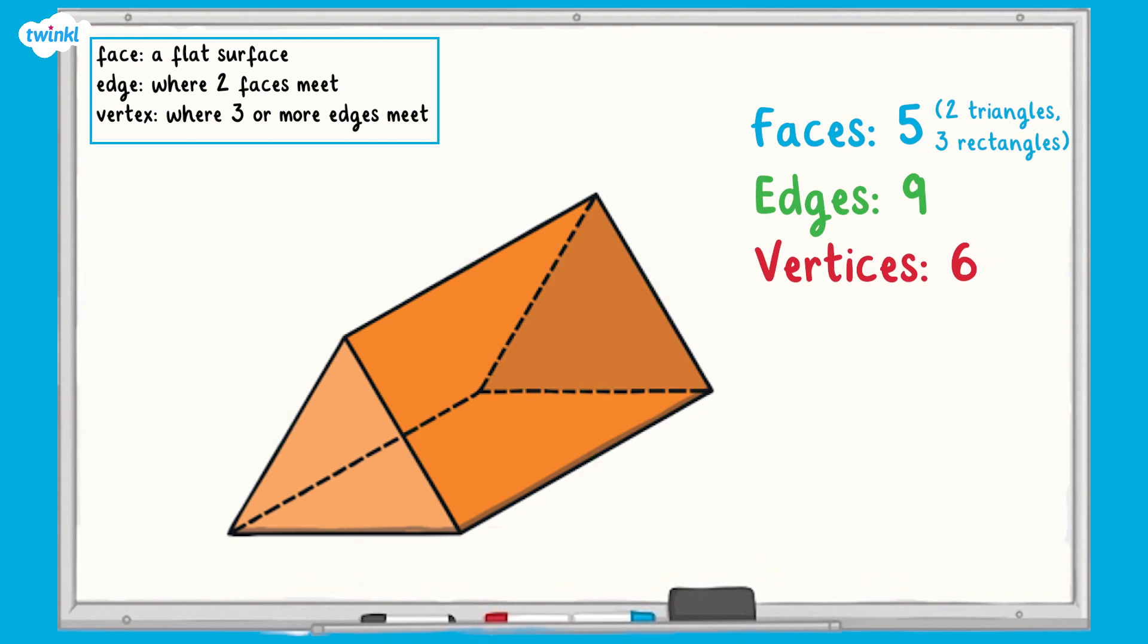And finally, for the vertices. Again, starting with the ones we can see. One, two, three, four, five, six.